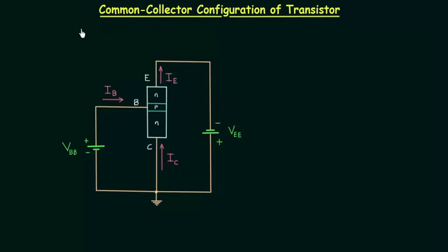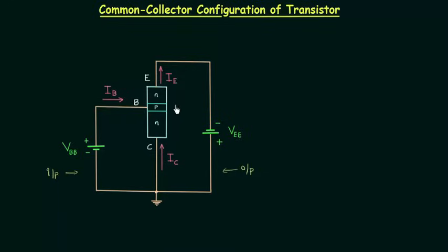The last type of transistor configuration is common collector configuration. In this configuration, the collector is common to both the input side and the output side. VBB and VEE are the biasing potentials. IB is the base current, IE is the emitter current, and IC is the collector current. We are using an NPN transistor in active mode, so the emitter-base junction is forward biased and the collector-base junction is reverse biased.